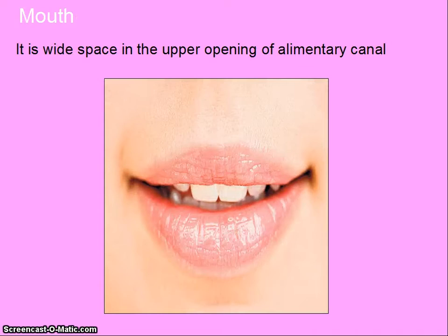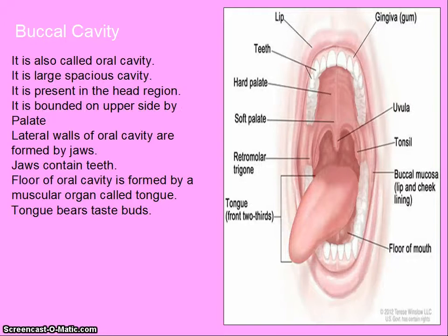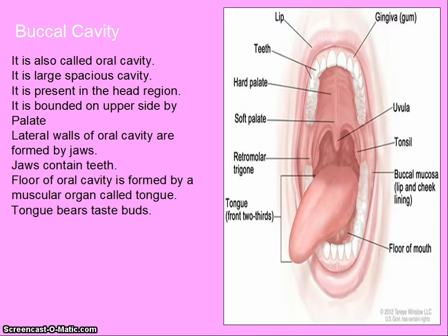Mouth is the wide space in the upper opening of elementary canal. Buccal cavity, also called oral cavity, is a large spacious cavity present in the head region. It is bounded on the upper side by palate. Lateral walls are formed by jaws, which contain teeth. The floor of oral cavity is formed by a muscular organ called tongue. Tongue bears taste buds.